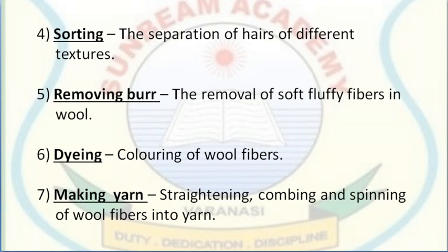Weaving and knitting are two different processes to make cloth. In weaving, two sets of yarns are used, whereas in knitting, a single set of yarns is used. Longer fibers are generally knitted into wool for sweaters, and shorter fibers are woven into woolen cloth. The quality of wool varies from breed to breed, determined by thickness, length, shine, strength and color of the fibers.